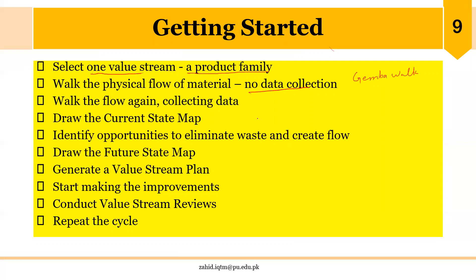Then we walk the flow again and collect data — relating to process times, changeover time, work-in-process inventory, etc. Based on the data collected, we draw the current state map using standard symbols and icons. Once the current state is drawn, we identify opportunities to eliminate waste and create flow, which is one of the major goals of VSM. Then we draw the future state map, which requires brainstorming and identification of improvement opportunities.